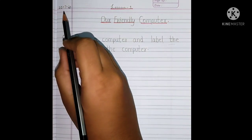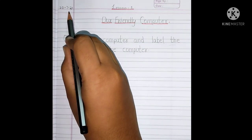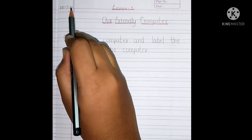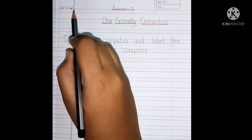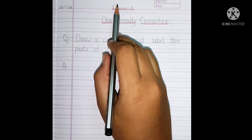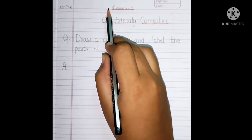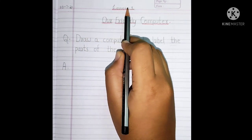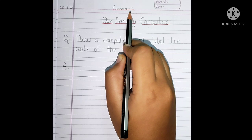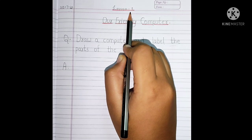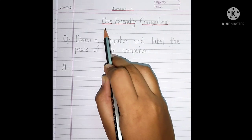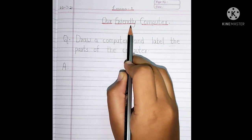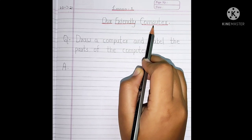On the left top, you need to write the date. And then, in the top center, we have to write the lesson number. And below that, we need to write the lesson name.